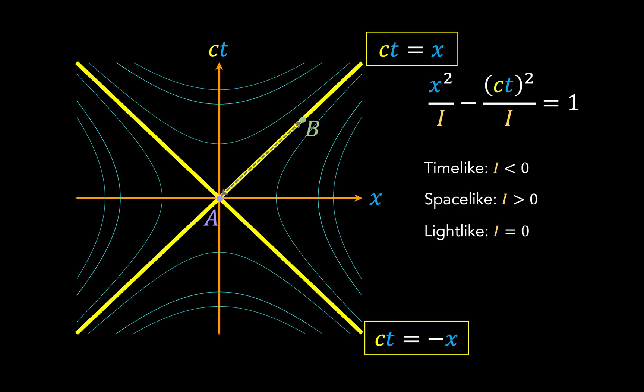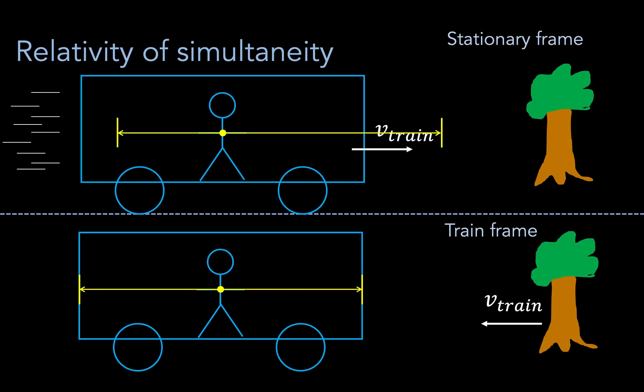Now, the Minkowski diagram reveals a few more interesting features, one of which is the preservation of causality. Now, what do I mean by this? Well, remember back in the second video of the special relativity series, we saw how simultaneity was relative, and the consequence of this is that the ordering of events depends on your reference frame.